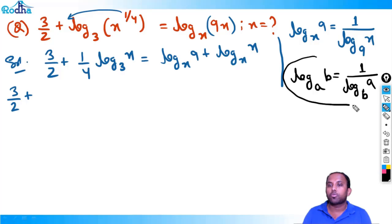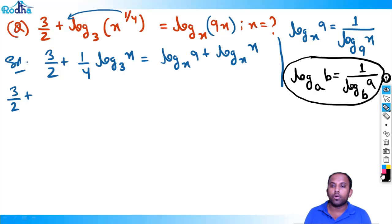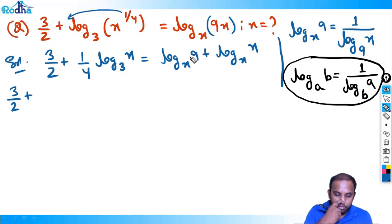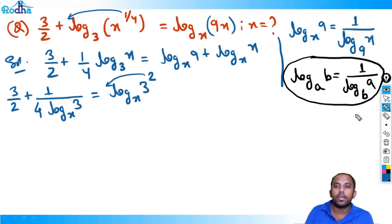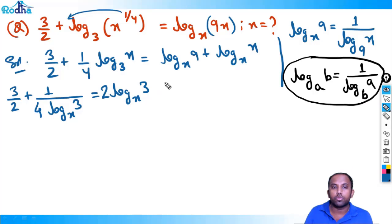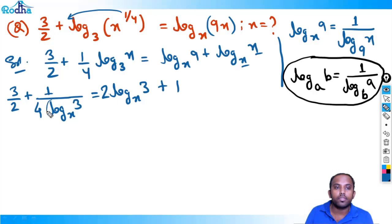Now, log_x(9) can be written using the reciprocal property: log_a(b) equals 1/log_b(a), so log_x(9) equals 1/log_9(x). Also, 9 equals 3^2, so log_x(9) equals log_x(3^2) which can be related to log_x(3). We recognize that log_x(3) and log_3(x) are reciprocals. Let's set a equals log_3(x), so log_x(3) equals 1/a. Then log_x(9) equals 2/a. The equation becomes (3/2) + (1/4)a equals 2a + 1.